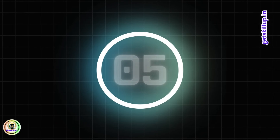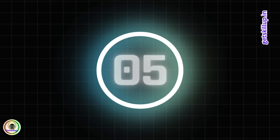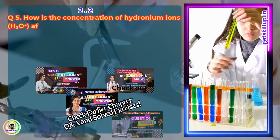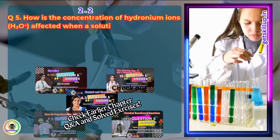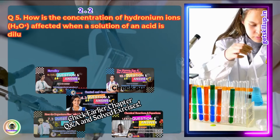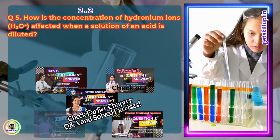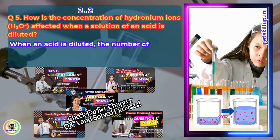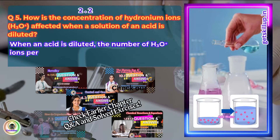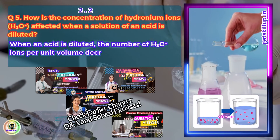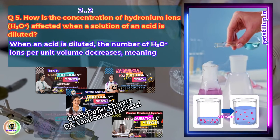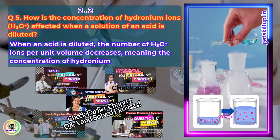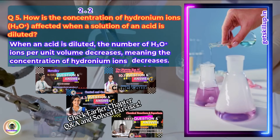Question 5. How does the concentration of hydronium ions H3O+ change when a solution of an acid is diluted? When an acid is diluted, the number of H3O+ ions per unit volume decreases, meaning the concentration of hydronium ions decreases.